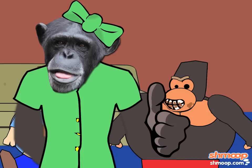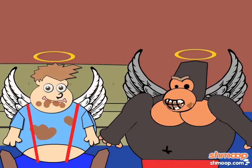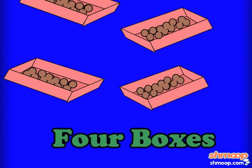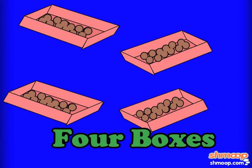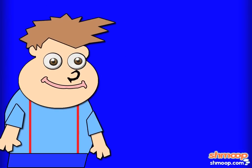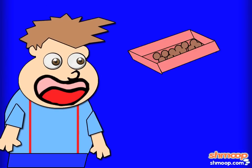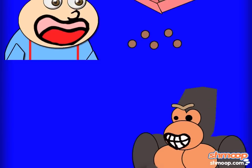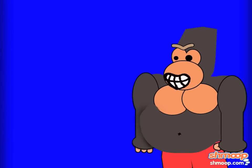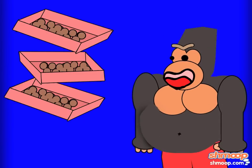The Gloops explained to their little angels that they had four boxes, all containing the same number of chocolates. To Augustus, they gave one box of chocolate plus five individual pieces. To Gargantuous, they gave three boxes of chocolate plus only one individual piece.